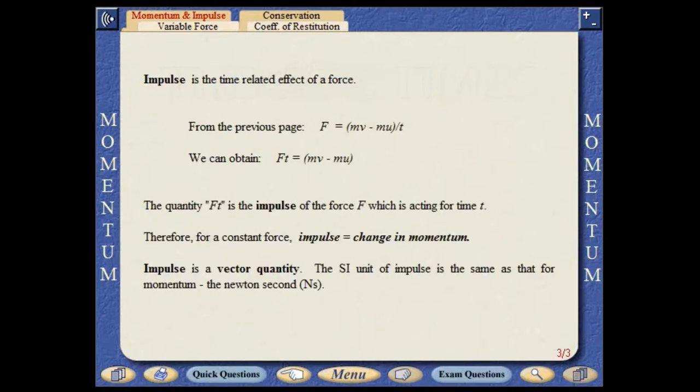Impulse is the time-related effect of a force. The quantity Ft is the impulse of the force F which is acting for time t. Impulse equals the change in momentum. Impulse is a vector quantity. The SI unit of impulse is the Newton second.